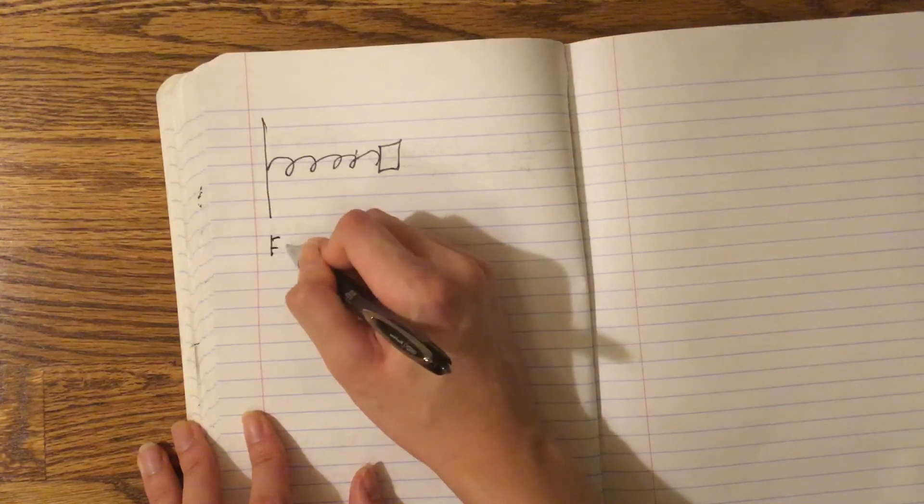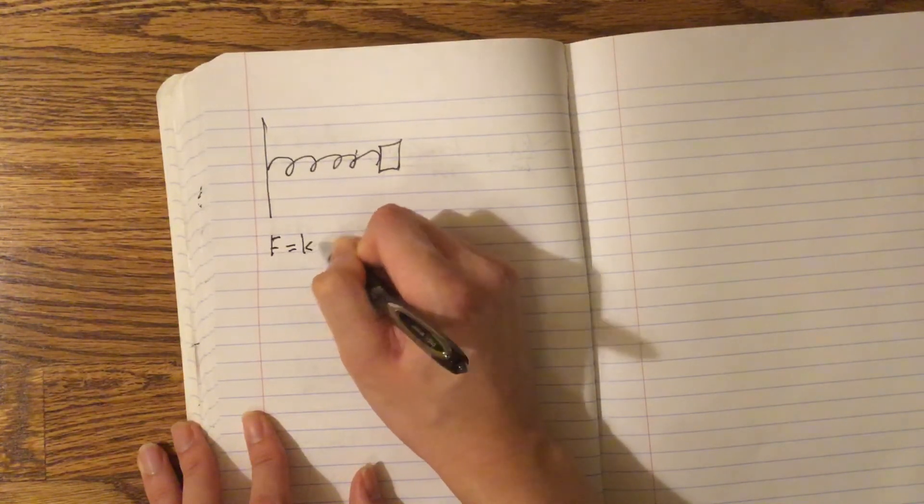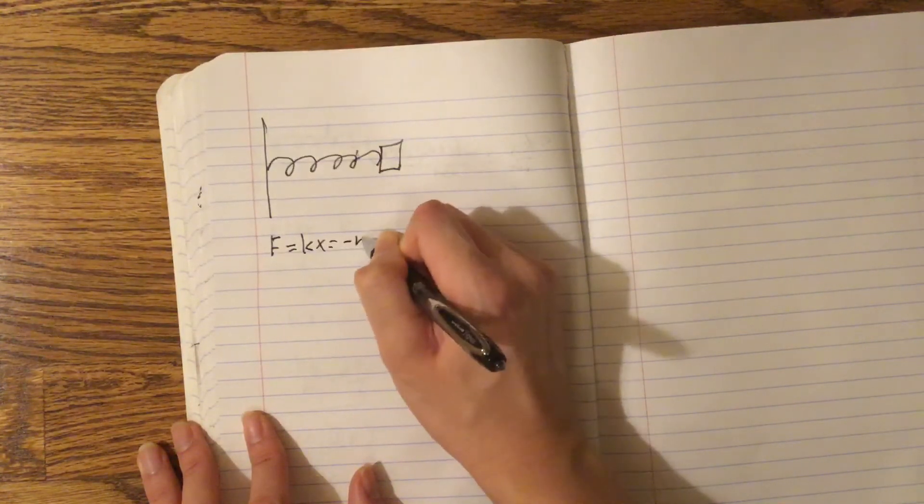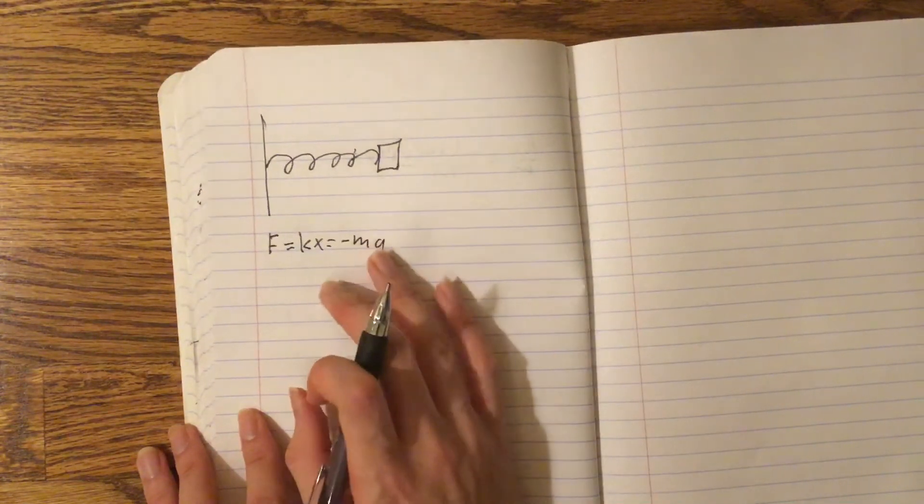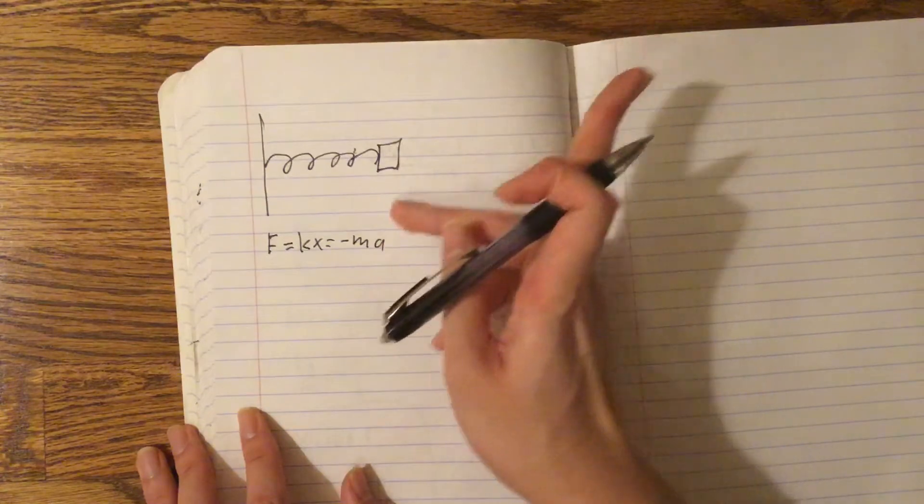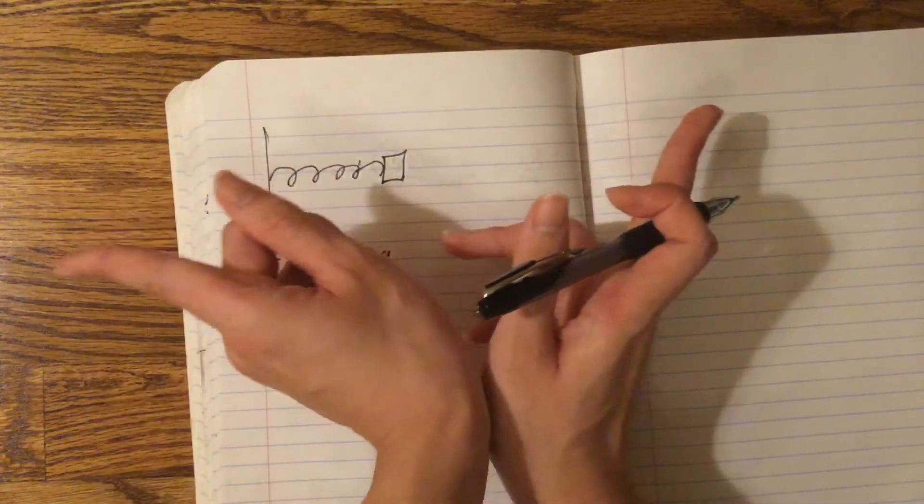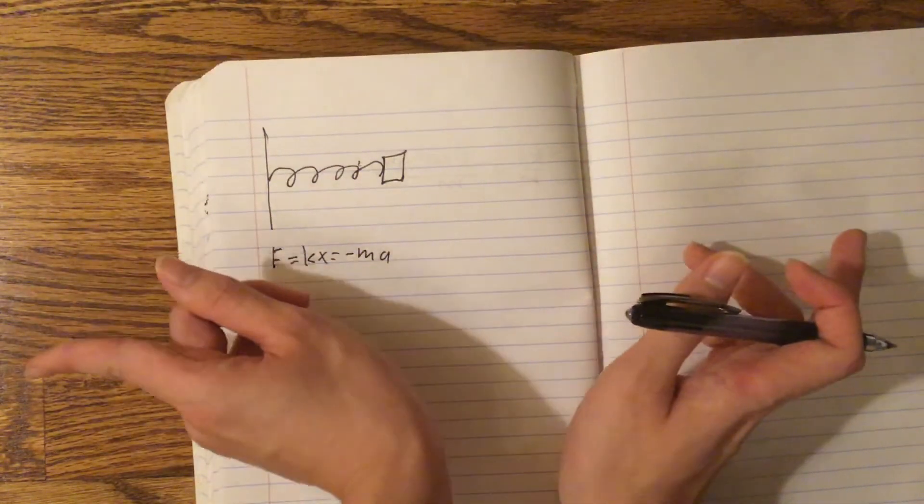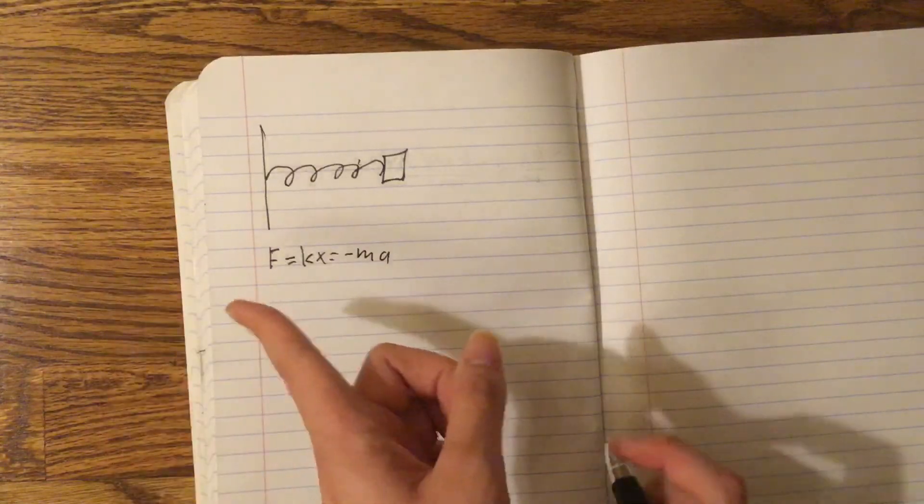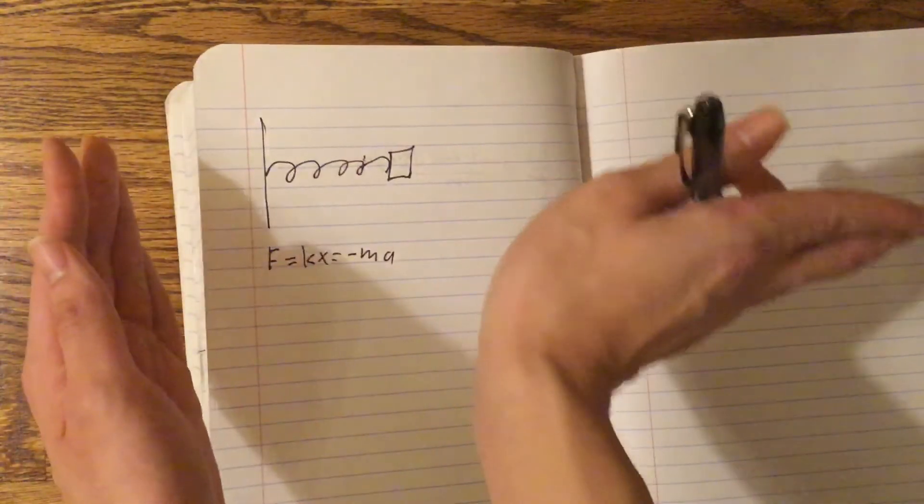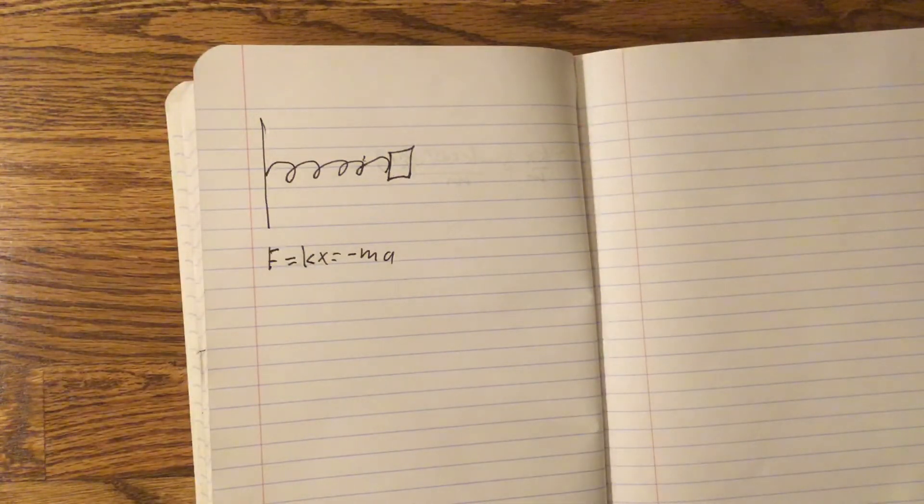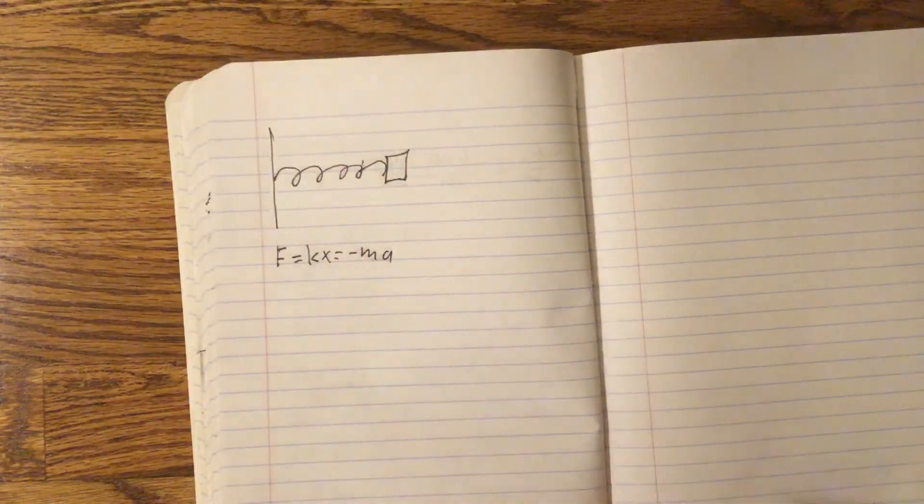First off, we start with this formula that force equals kx, which equals negative ma. Why is a negative? Well, if x is to the right, then acceleration would be pointing to the opposite direction. Likewise, if x is to the left, then a would be accelerating in the opposite direction. Opposite direction means negative sign.